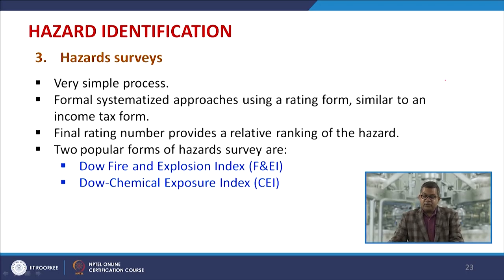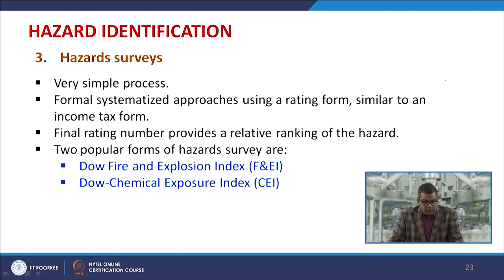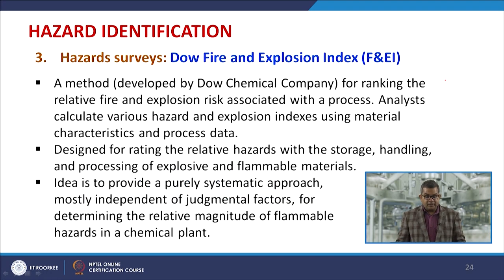Hazard surveys are simple processes involving straightforward questions, plus a more formal systematized approach using a rating form similar to an income tax form. A final rating number provides a relative ranking of the hazard. There are two popular forms of hazard survey: the Dow Fire and Explosion Index (F&EI) and the Dow Chemical Exposure Index (CEI).